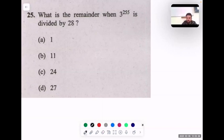This question asks: what is the remainder when 3 raised to 255 is divided by 28? The formula I'll use is (ax + 1) raised to power n divided by a. Now if it's 28, it will become what? Can we write it as 27? So if it is 27, it becomes (ax - 1) raised to power n upon a.